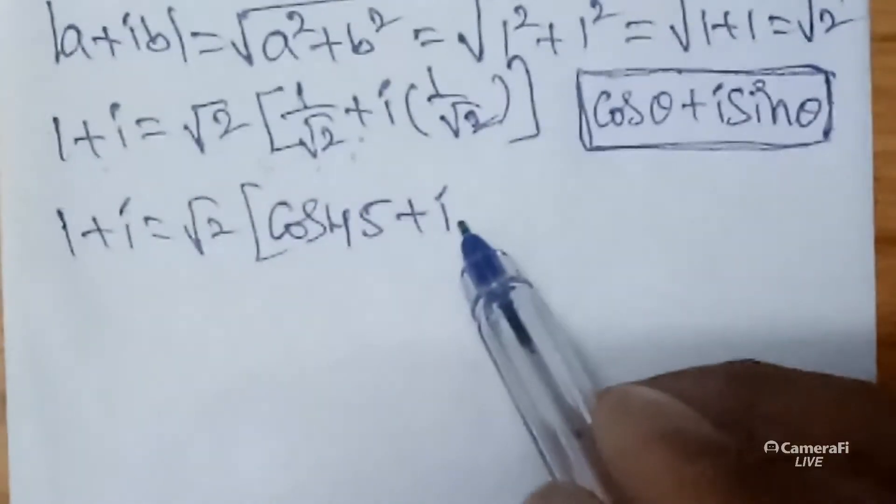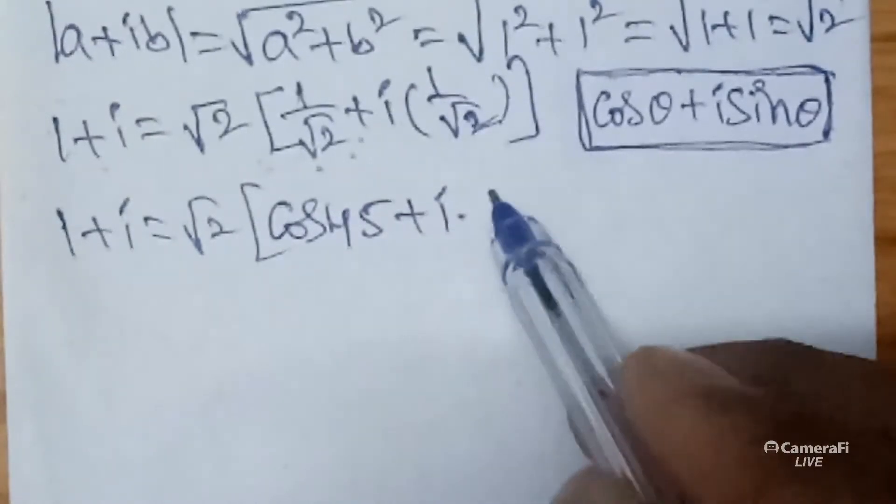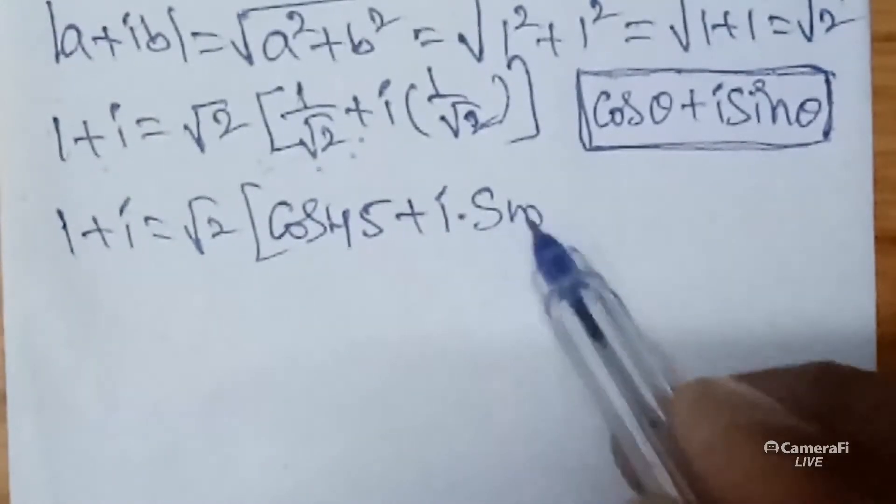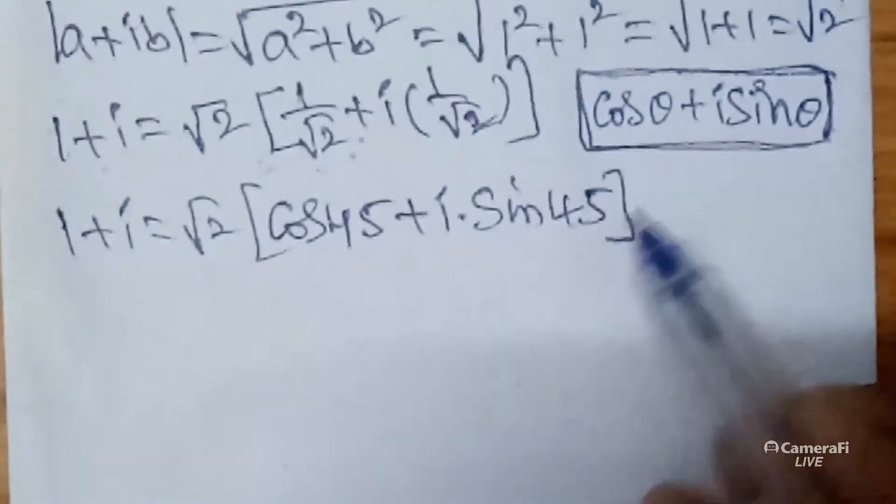So 1 plus i equals root 2. The first value 1 by root 2 you can write as cos 45, and the second value 1 by root 2 you can write as the sine term — so that is sin 45.